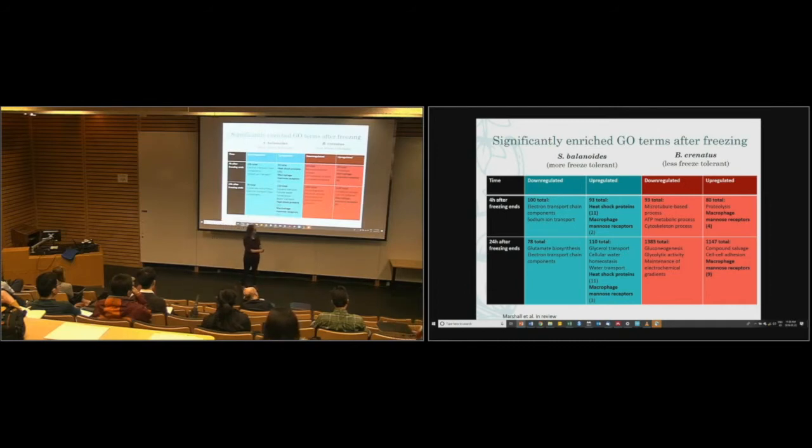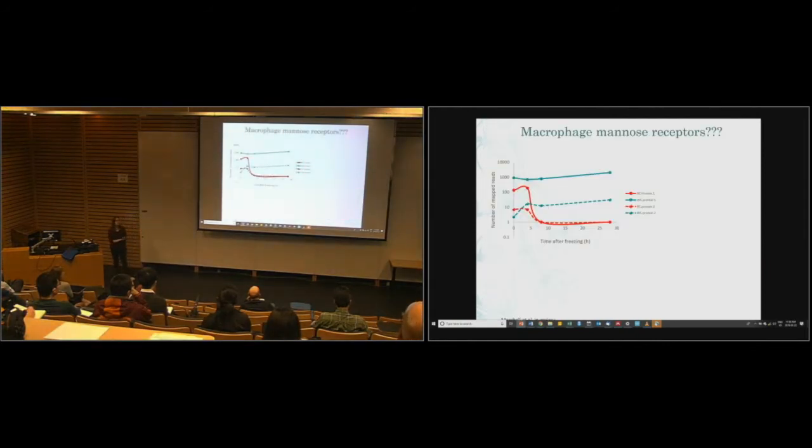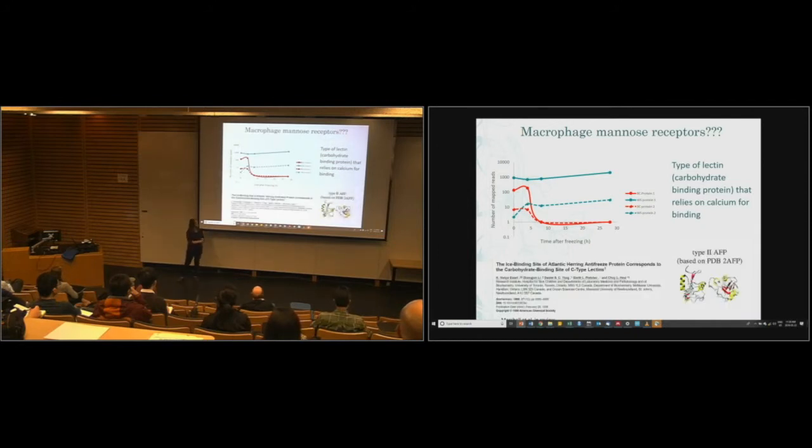In our less cold freeze tolerant animal, we see less of that down-regulation of the electron transport chain, some of these macrophage mannose receptors, and then a lot to do with proteolysis. Things that make sense in the context of protein damage after freezing. So what's going on with these macrophage mannose receptors? This is what the annotation told me they were, but if we dig a little bit deeper, this is a type of C-type lectin. So a carbohydrate binding protein that relies on calcium. The cool thing about this is that these C-type lectins are the source of type 2 antifreeze proteins.